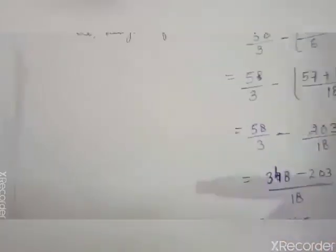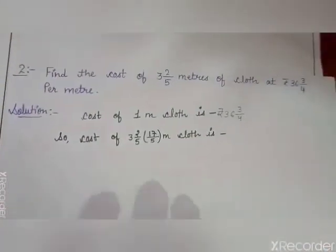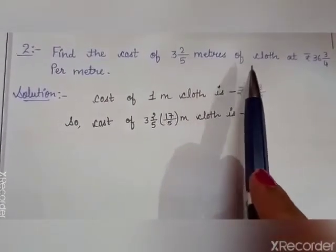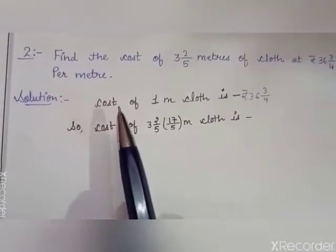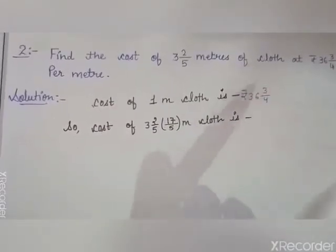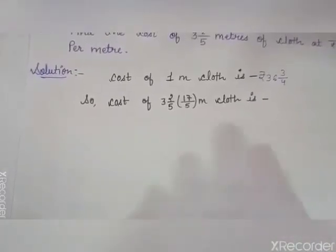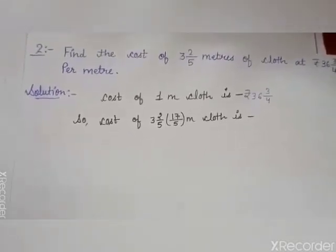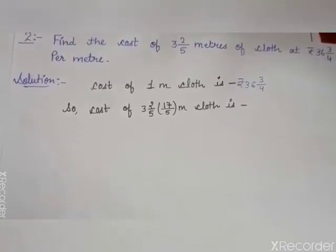Now solve the second question. Find the cost of 3 whole 2 by 5 meters of cloth at Rs. 36 whole 3 by 4 per meter. That means, the cost of 1 meter of cloth is given and you have to find the cost of 3 whole 2 by 5, that is near about 3.4 meters of cloth. Since you are finding more from less, you use multiplication.